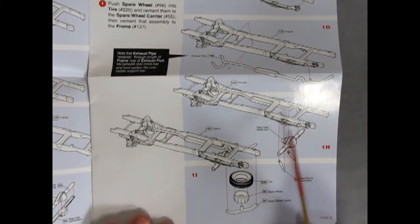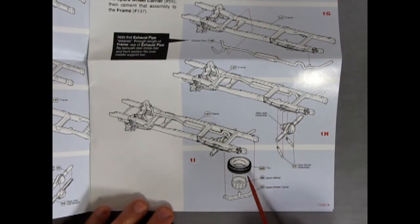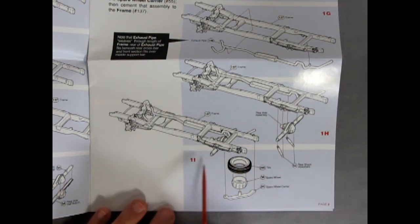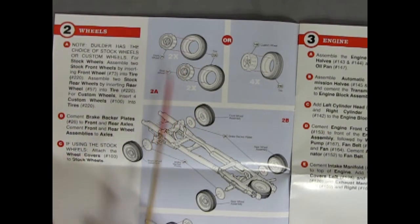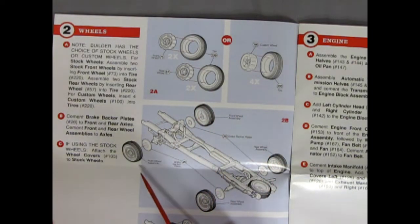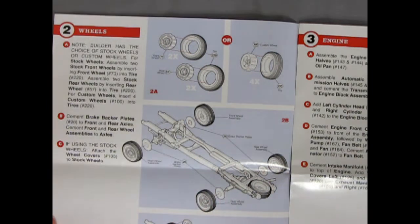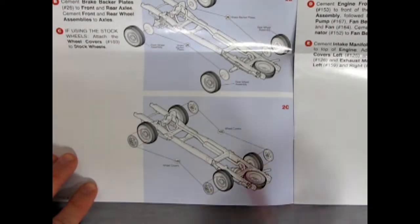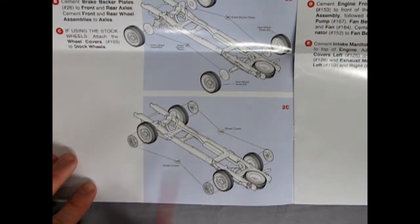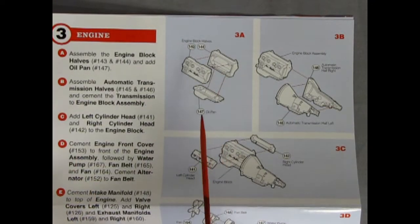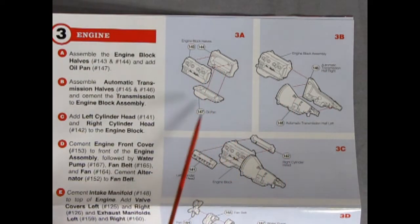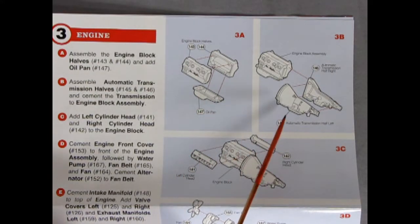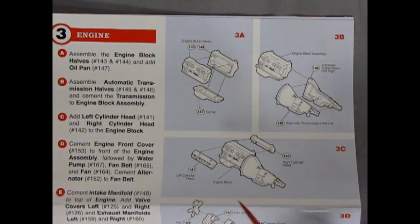There's our differential getting glued in under the springs and under the exhaust, and then our rear shocks going in. And then much like that AMT-53 Ford we have our spare wheel carrier going up into the back. Step two is showing the wheels going into the tires and these are just two pieces so there are no wheel backs. However we do get these nice brake backer plates that glue in on our pins. Here we have a Ford V8 with the two engine block halves going together and the oil pan underneath.